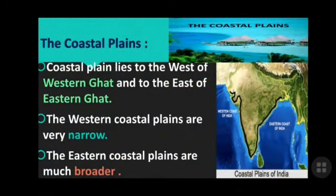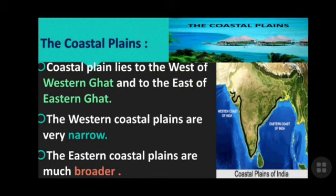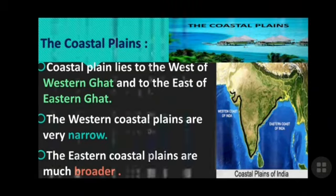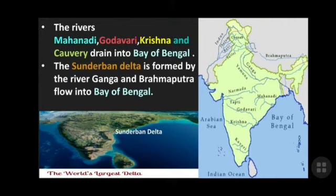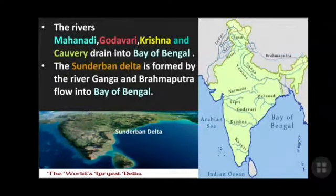The fifth physical division is the coastal plains, which lie to the west of the Western Ghats and to the east of the Eastern Ghats. The western coastal plains are very narrow compared to the eastern coastal plains. Rivers like Mahanadi, Godavari, Krishna, and Kaveri drain into the Bay of Bengal. The Sundarbans Delta, formed by the rivers Ganga and Brahmaputra, is the world's largest delta — it is an area of land formed at the mouth of a river where rivers enter the sea.